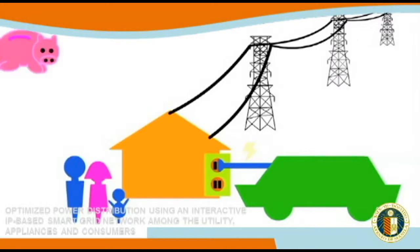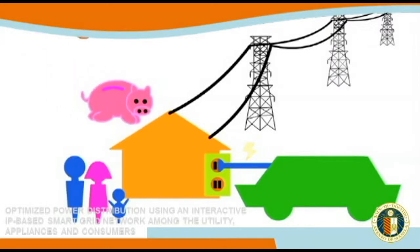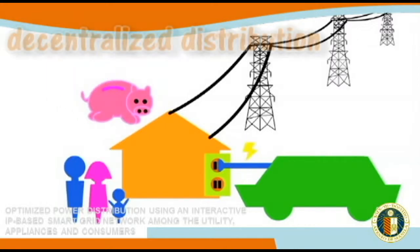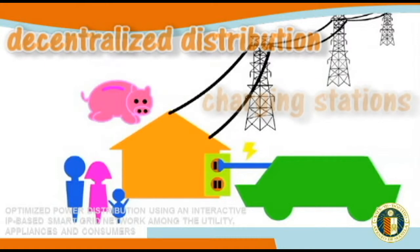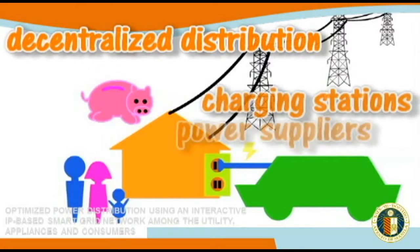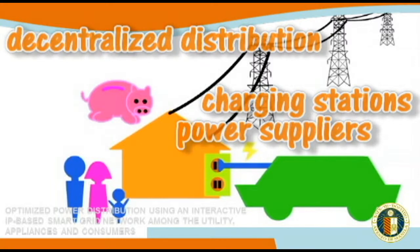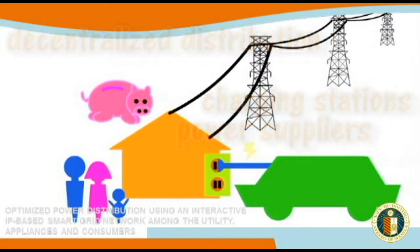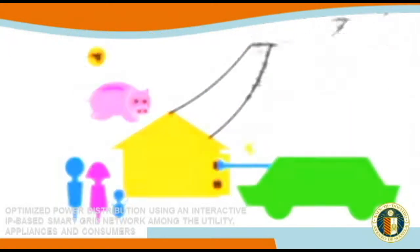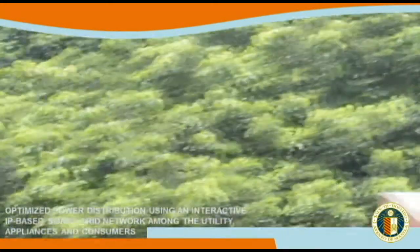These very same consumers can be part of the decentralized system of distribution by being charging stations and eventually suppliers of electricity — though sometimes intermittent yet environmentally friendly sources such as wind, solar, and hydro — to the smart grid itself.